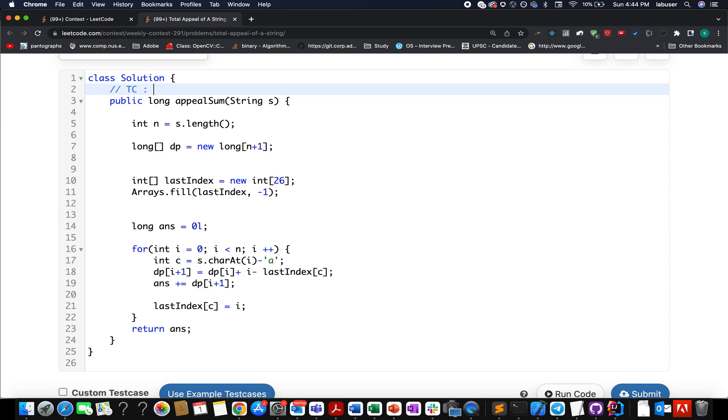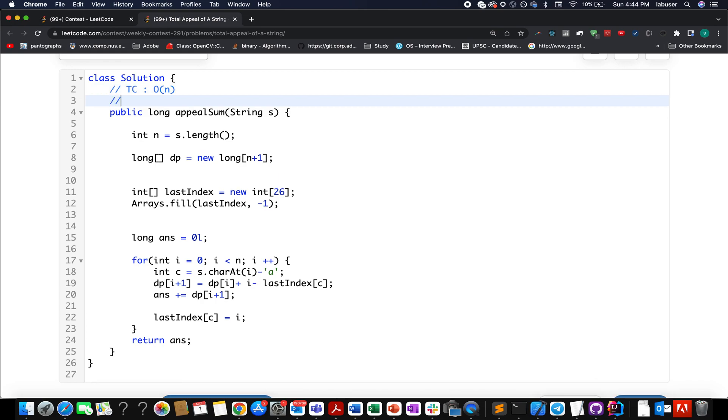Once you are done with this, you simply return the answer variable. So let's try this up. Accept it. The time complexity of this approach is of order of n because you are iterating through the input string only once, and yes, you have space complexity too because you are using a dp array of size n.